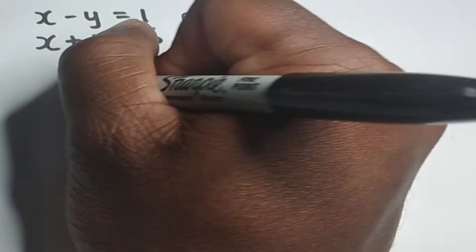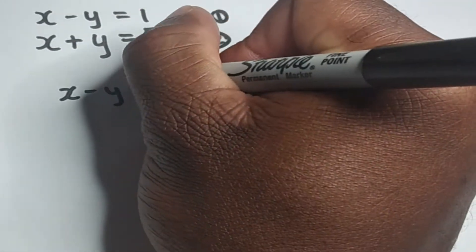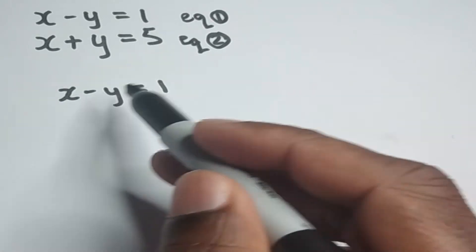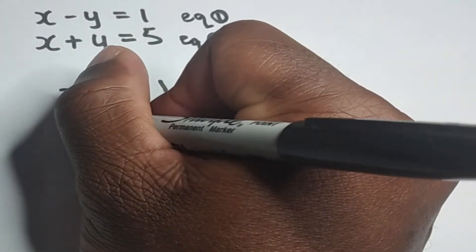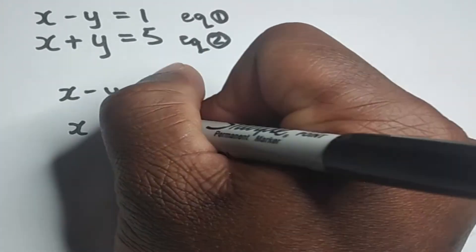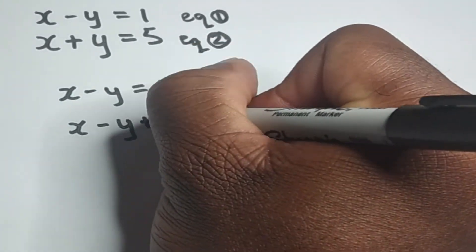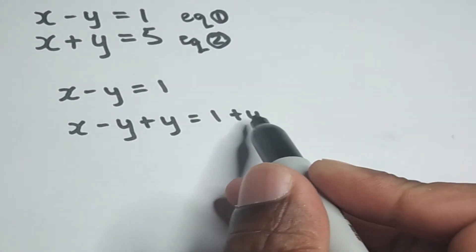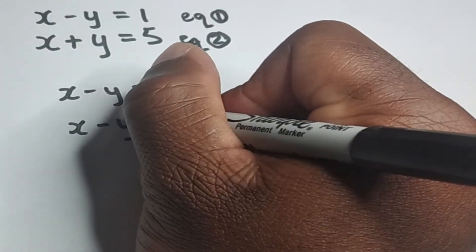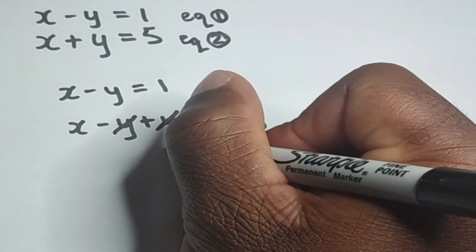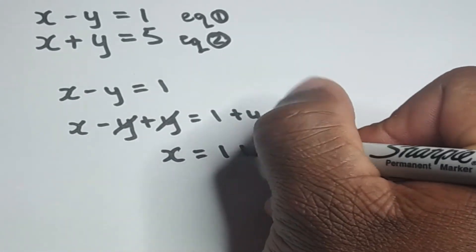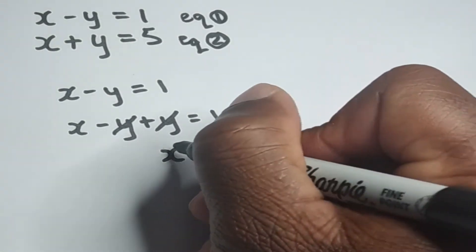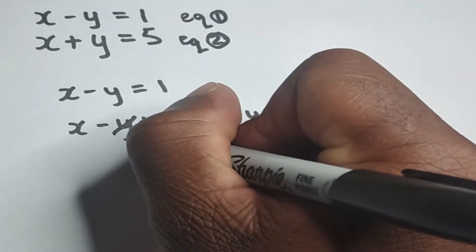So here we have equation one: x minus y is equal to one. I'm going to transpose this for x, which means I want x on one side of the equal sign by itself. To get rid of minus y, I need to add y to both sides. Minus y plus y cancel out, and I'm left with x is equal to one plus y.